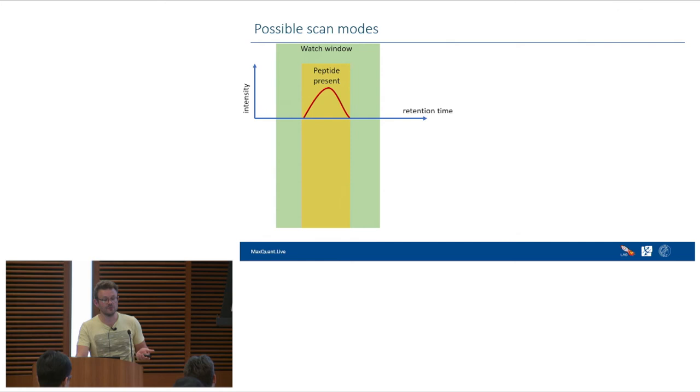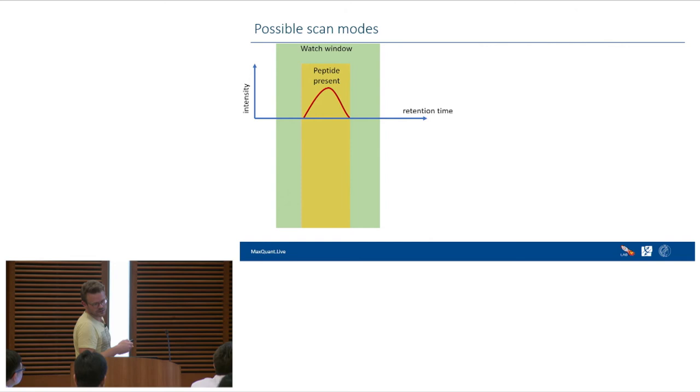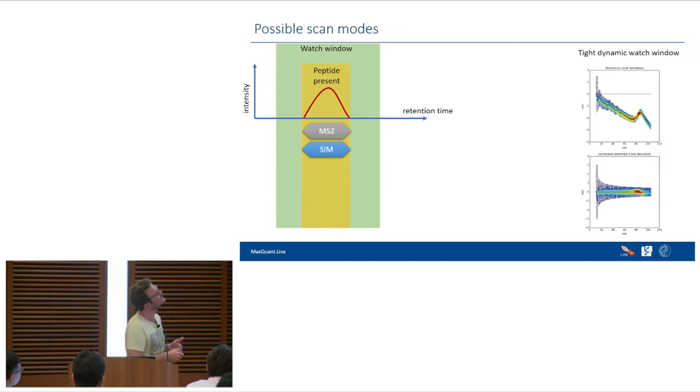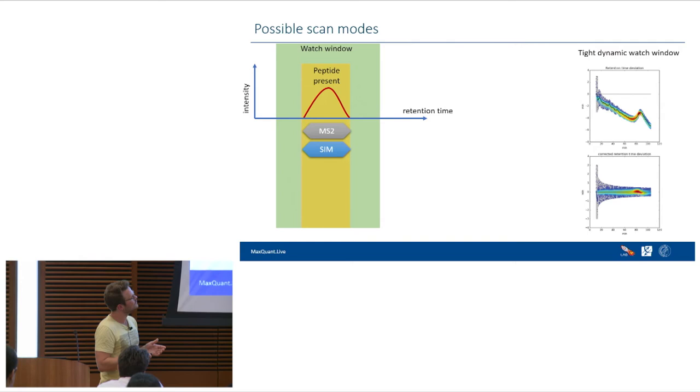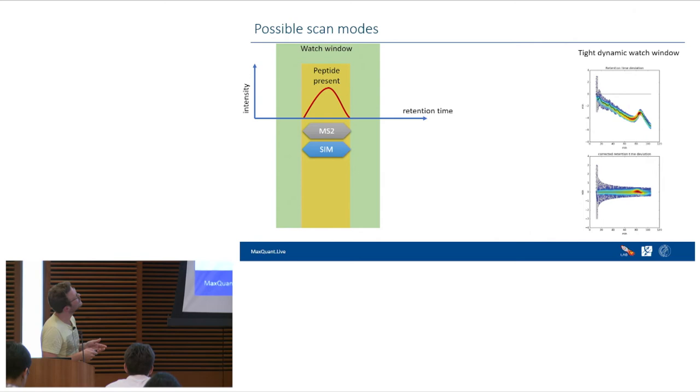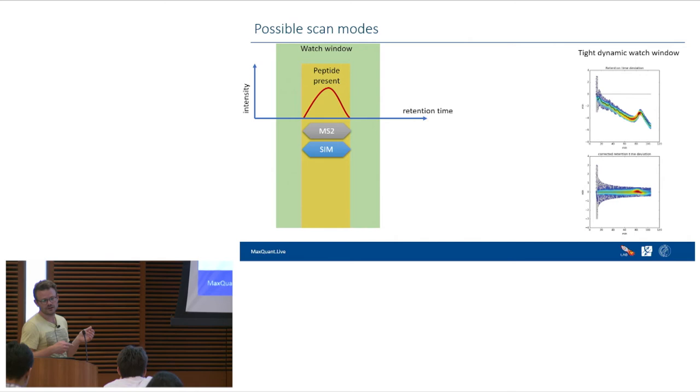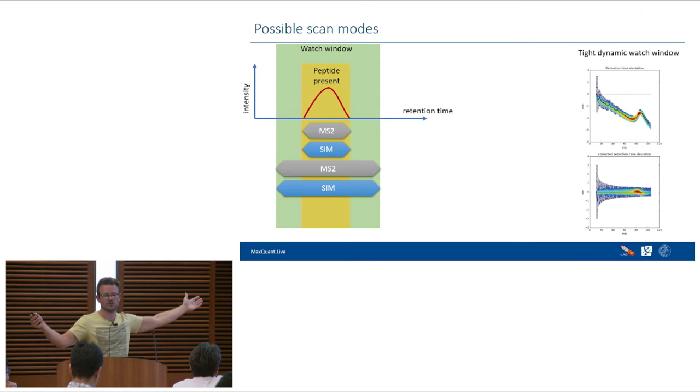So in a more general way, which are the possible scan modes? So we have two types. Either there's a time span where the peptide is present, it's visible on the MS1 level, but there's also this watch window. And this is dynamically adjusted over the runtime in real time. So this means we can not only do MS2 scans or SIM scans when the peptide is present, when we have the signal, but also over the whole watch time, over the whole window, this can be fragmented over and over again, or SIM scans can be performed over and over again, because this is somewhere in the noise.